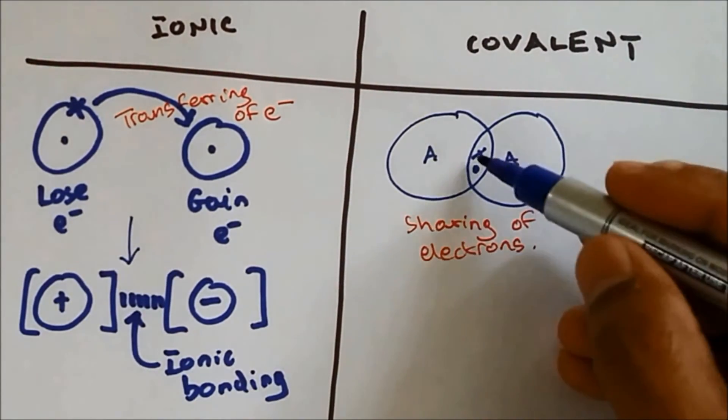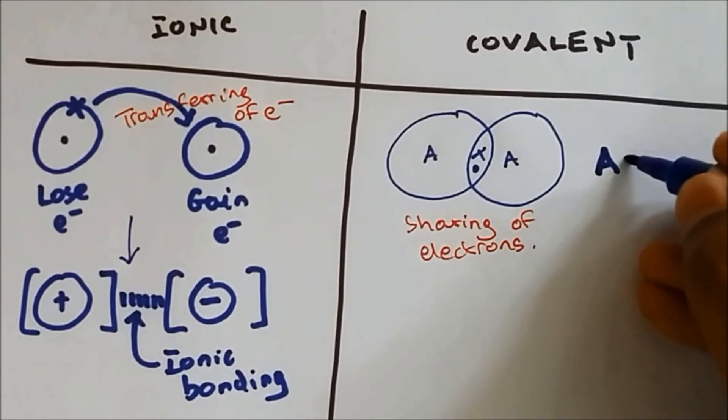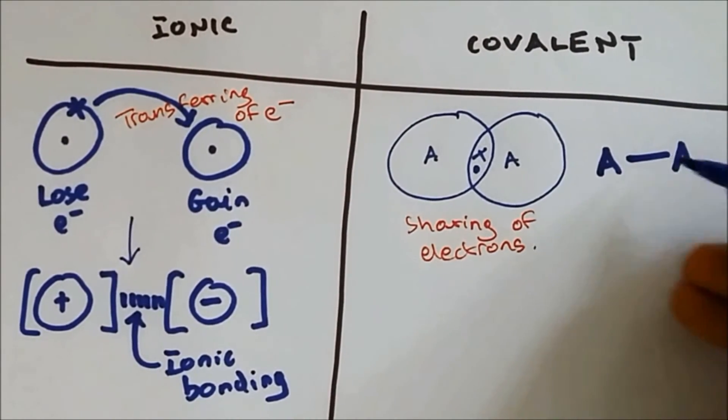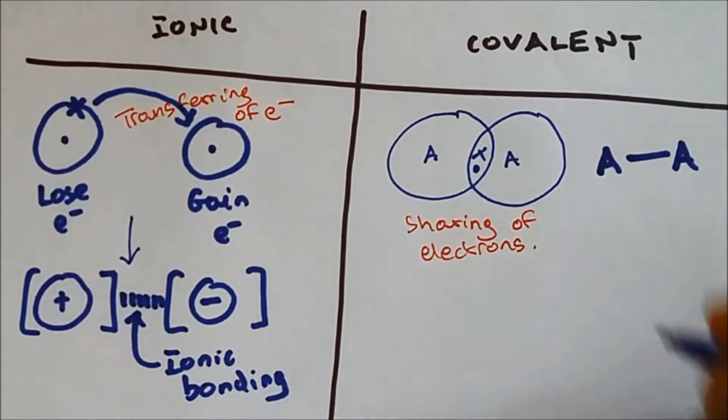If there are one pair of electrons between the atom it is called single bond and a single line is represented for a single bond.